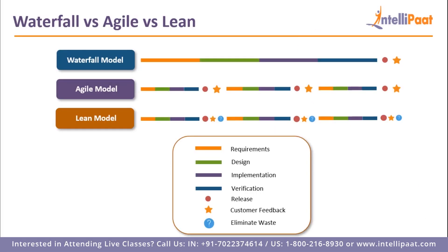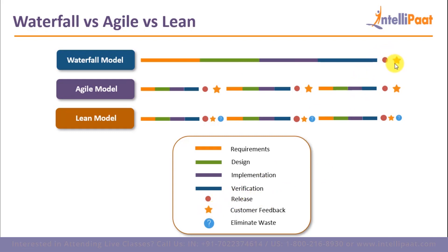The waterfall, agile, and lean model life cycles are what we see on the screen. The orange bar represents requirements, the green bar represents design, the purple bar represents implementation, and the blue bar represents verification. This is basically the life cycle of software development. The red dot tells us that a release is happening, and the star represents customer feedback.